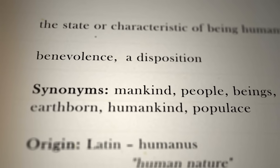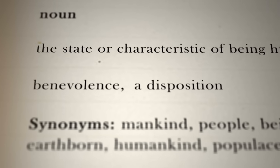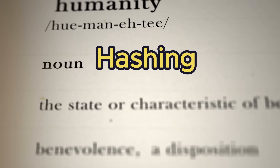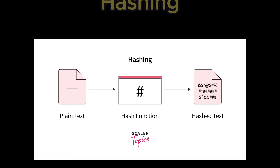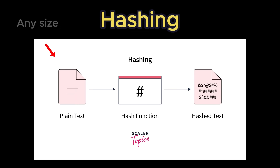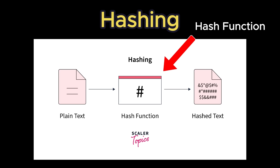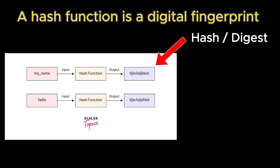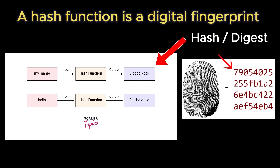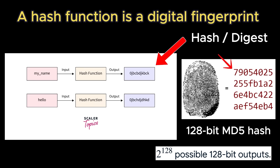The first thing you want to do to break down any complex computer science topic is to begin with a concrete definition. Hashing is the process of transforming data of any size into a fixed-size output using a mathematical function known as a hash function. The resulting value, called a hash or digest, acts like a digital fingerprint for the input data. It uniquely represents the content without revealing the original data itself.